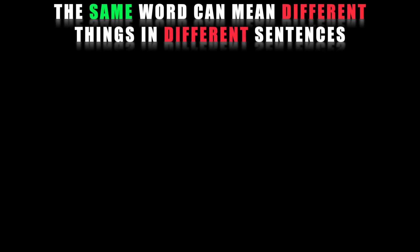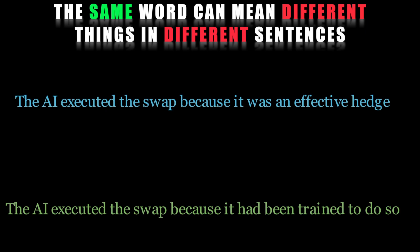Attention is the key component of the transformer model that allows it to focus on specific parts of the input sequence and give more weight to relevant information.